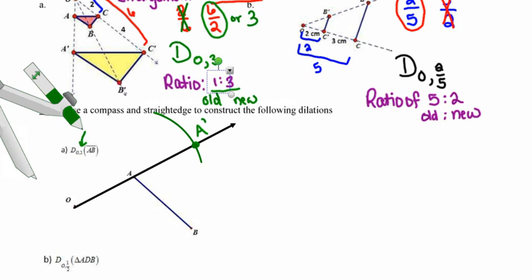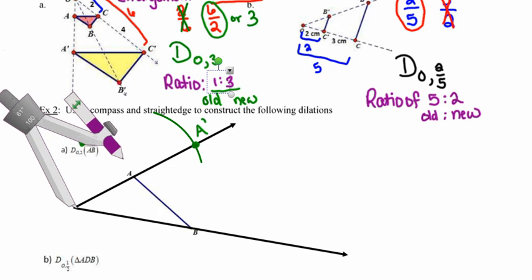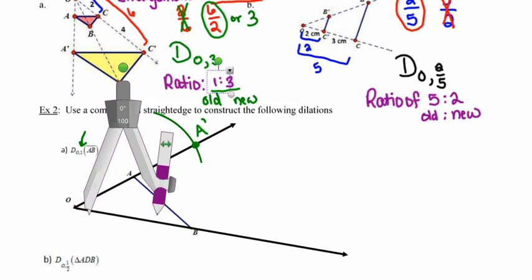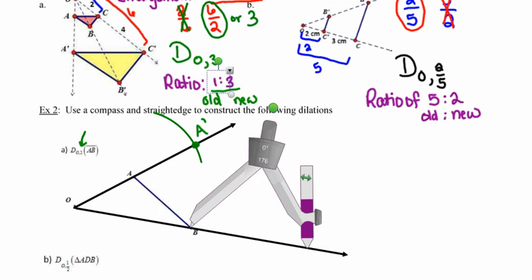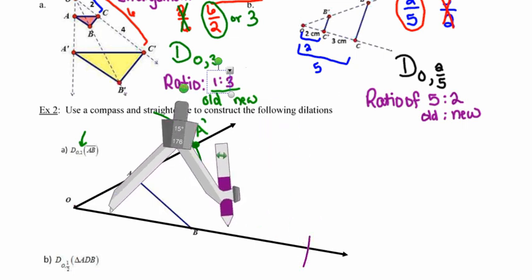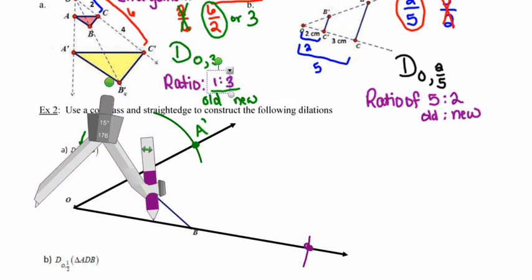I'll use that same idea to construct point B prime. O, B, and B prime all have to lie on the same straight line, so I construct that line. Then I use my compass to measure the distance from O to point B, and measure that same distance again to draw an arc that intersects my line. Where that arc intersects the line is point B prime. That scale factor of two means the new points are twice as far from the center as the originals were.